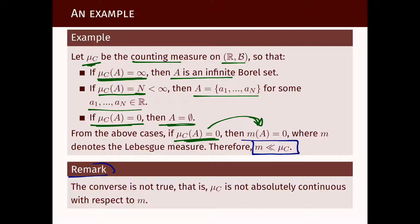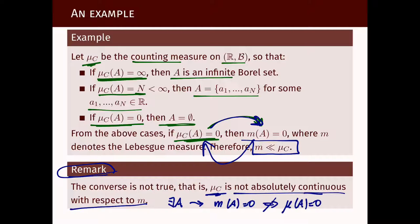A quick remark: the converse is not true. The counting measure is not absolutely continuous with respect to the Lebesgue measure. Why? Because there exist sets A that have Lebesgue measure zero, but this does not imply that μ_C(A) = 0.